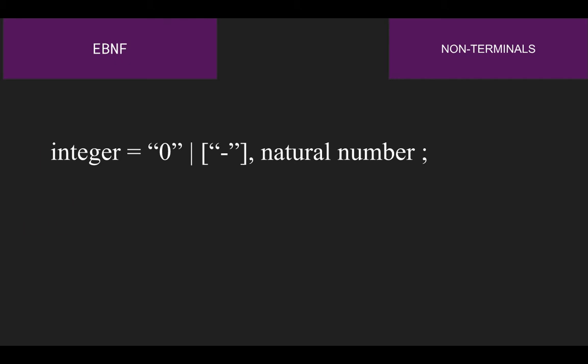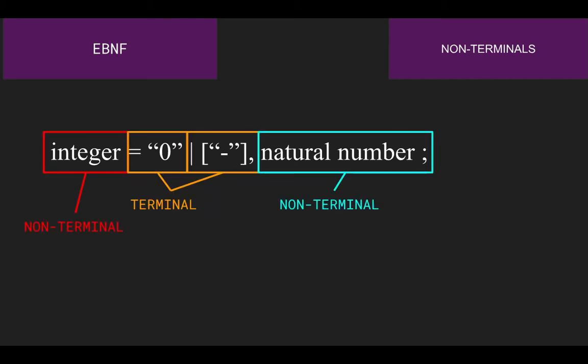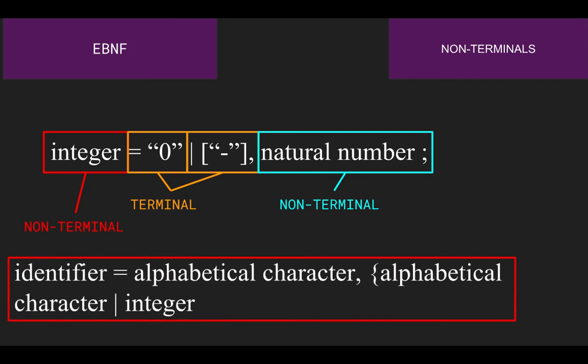These terminals then can be used as repeated through other non-terminal products to further develop and define your grammar and language, such as in the identifier, where it uses two non-terminal terminals as the product, where it must have an alphabetical character at the start, then a repetition of either more alphabetical characters or an integer.